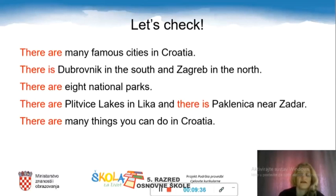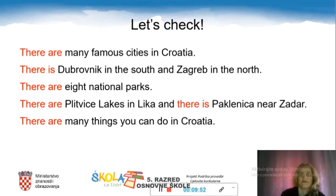Let's check. There are many famous cities in Croatia. There is Dubrovnik in the south and Zagreb in the north. There are eight national parks. There are Plitvice Lakes in Lika and there is Paklenica near Zadar. There are many things you can do in Croatia.